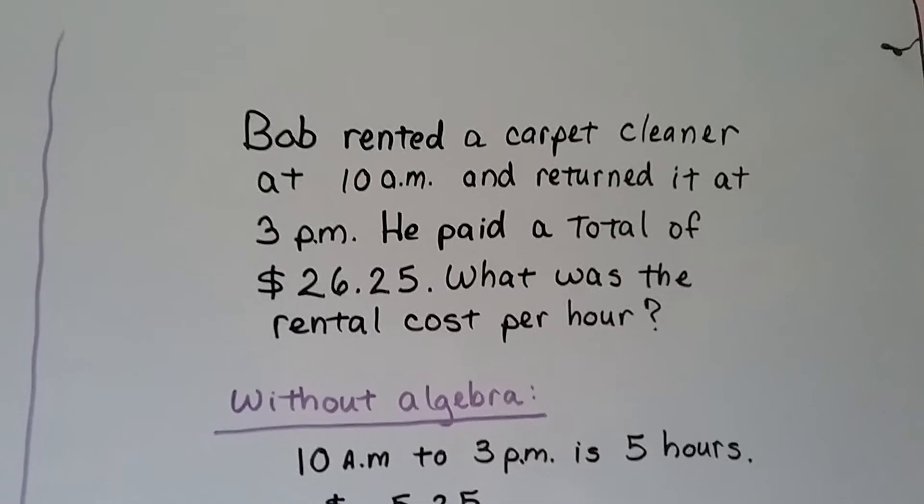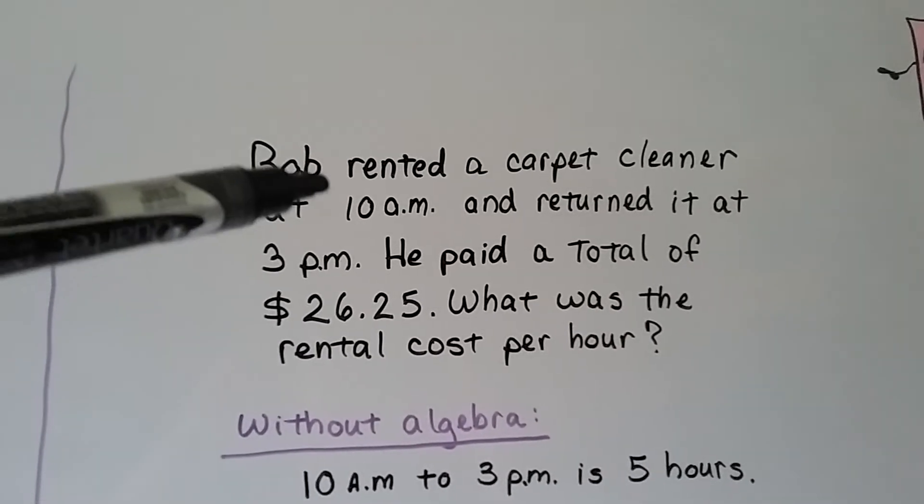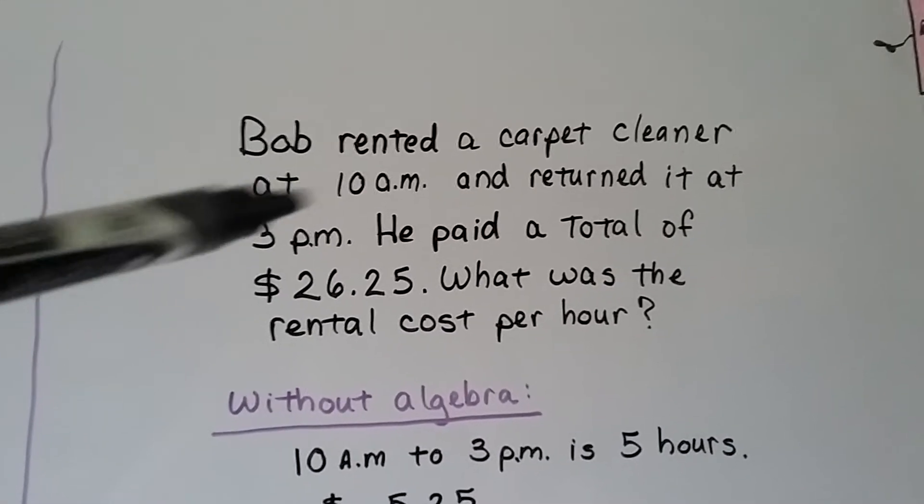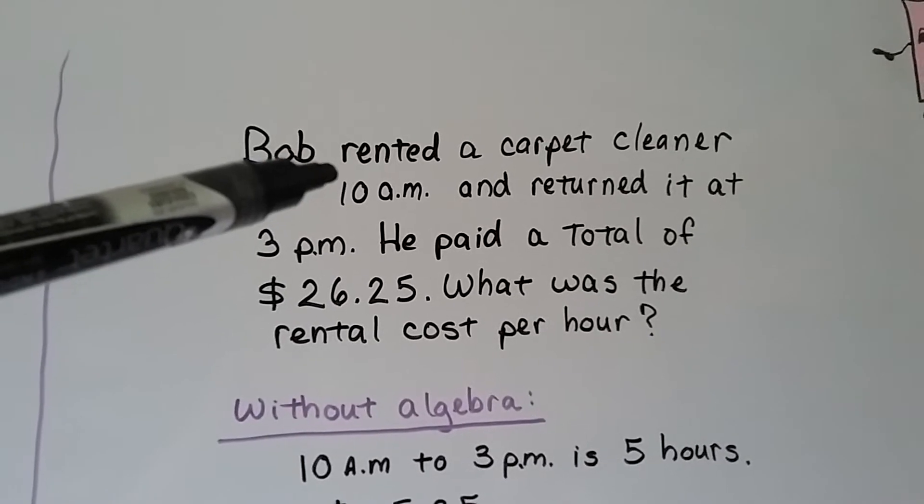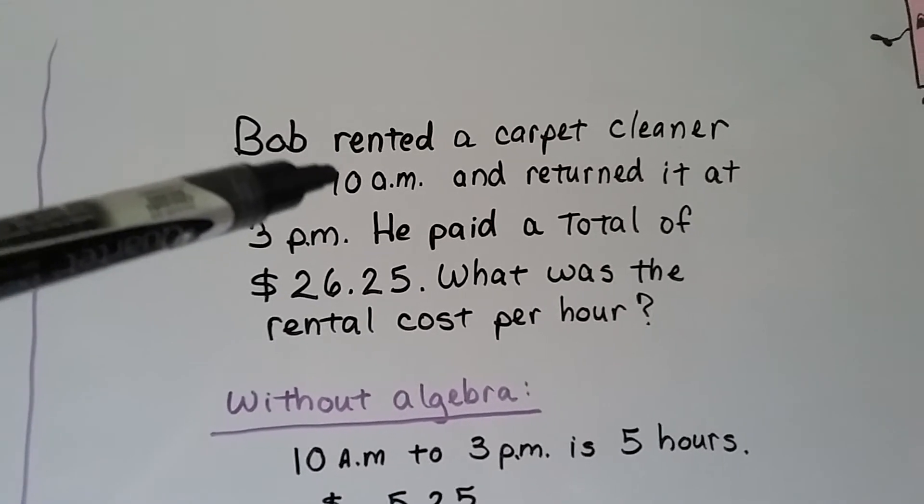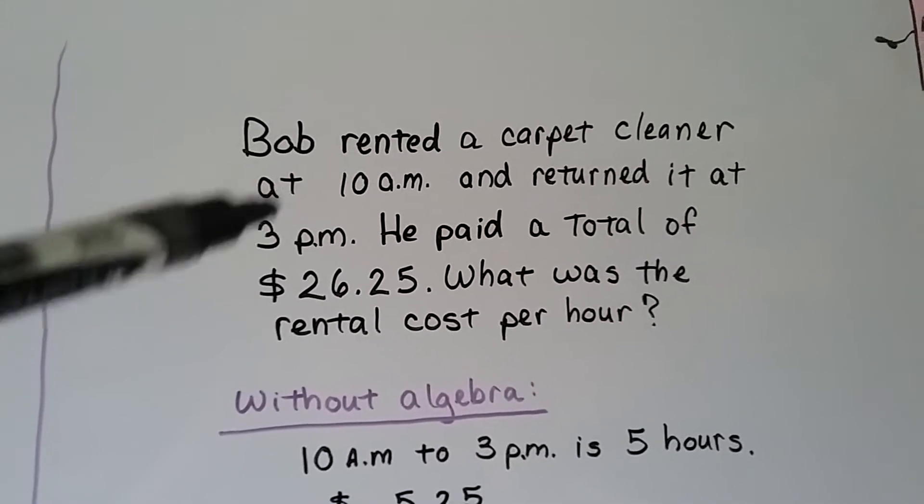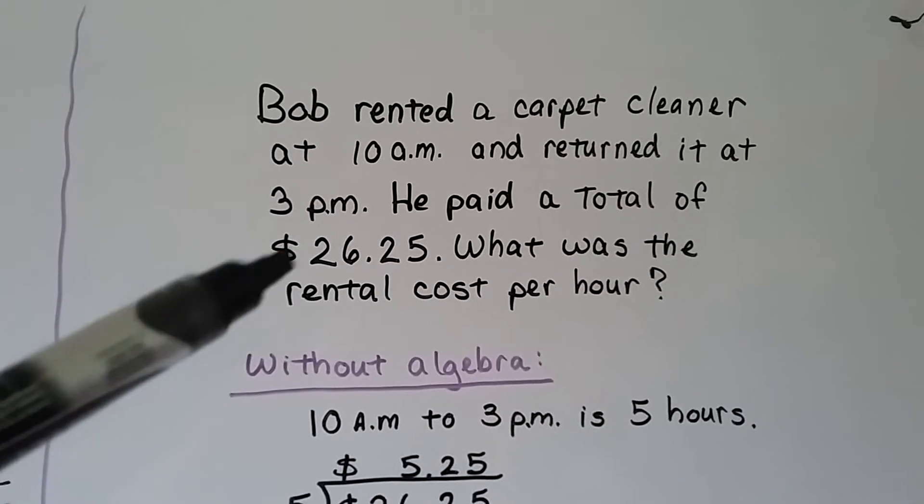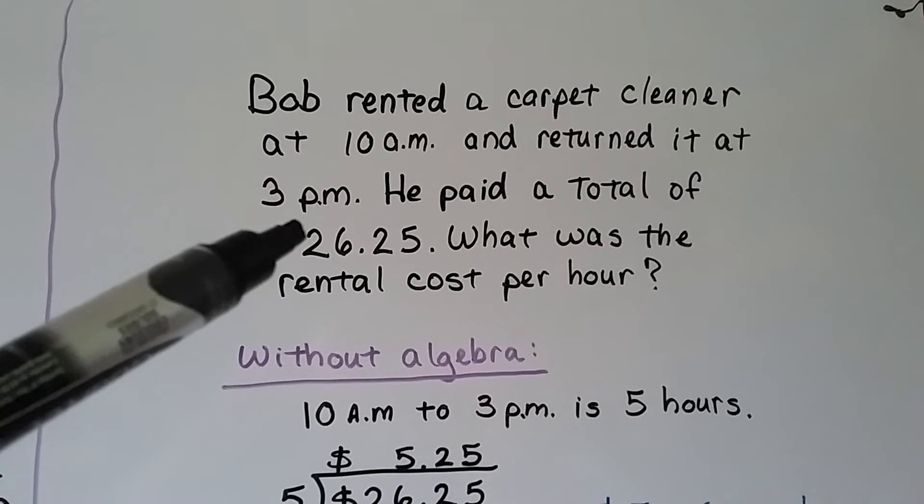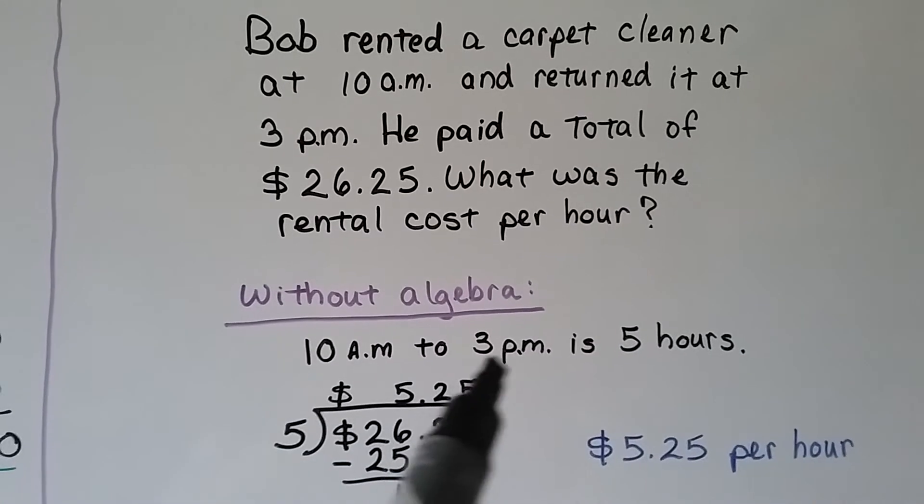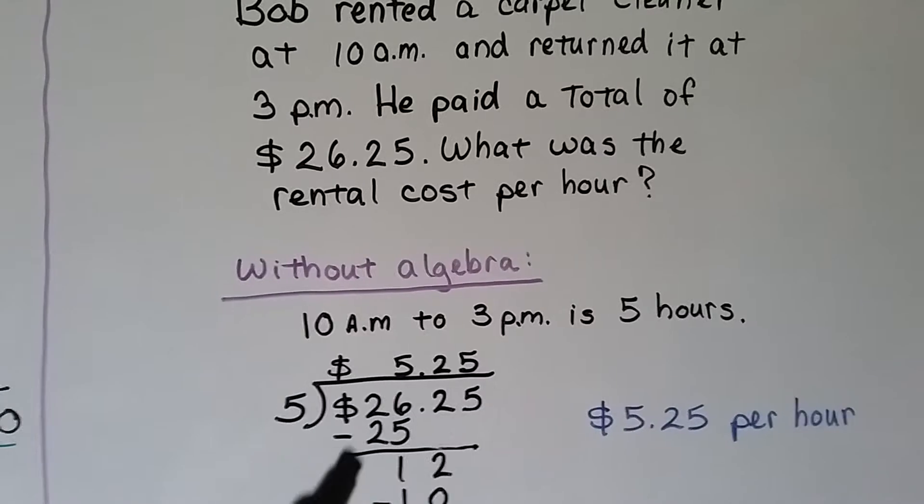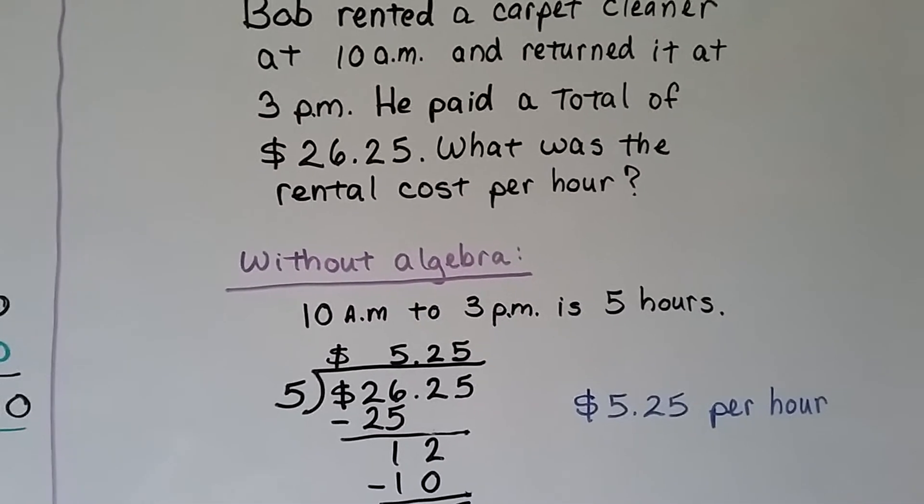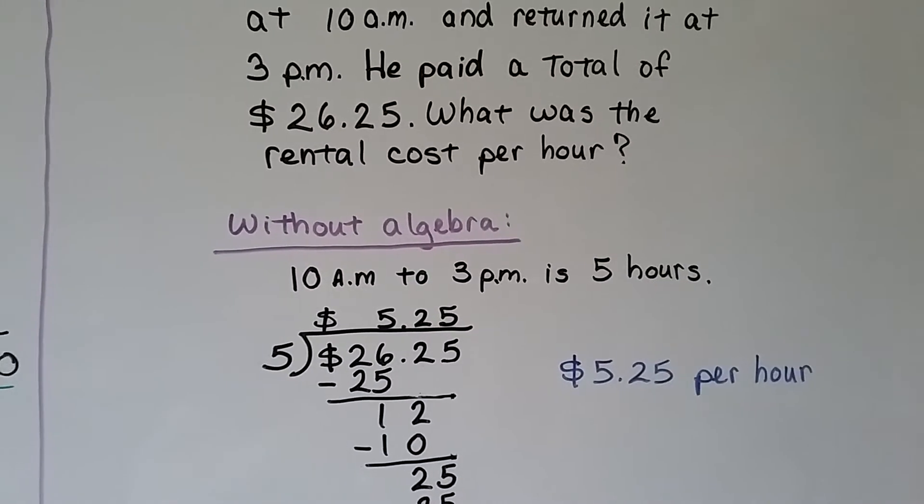So in this problem, we have to recognize that from 10 a.m. to 3 p.m. is 5 hours. From 10 to noon would be 2 hours. And then from noon to 3 p.m. is 3 hours and 2 plus 3 is 5. So he had it for a total of 5 hours. And he paid $26.25. So knowing that 10 a.m. to 3 p.m. is 5 hours, all we have to do is divide the $26.25 by those 5 hours, and we'll find out how much he paid for each hour.